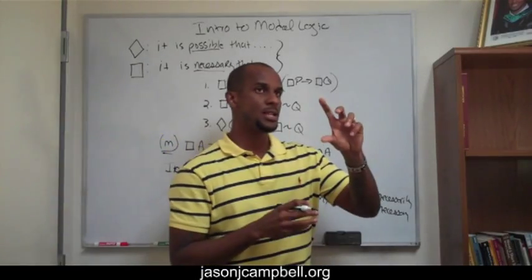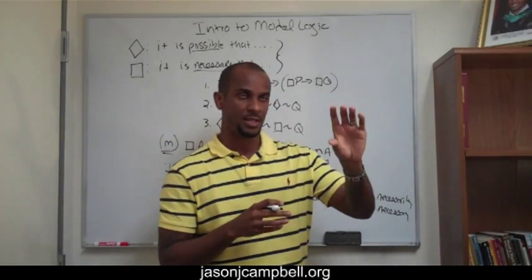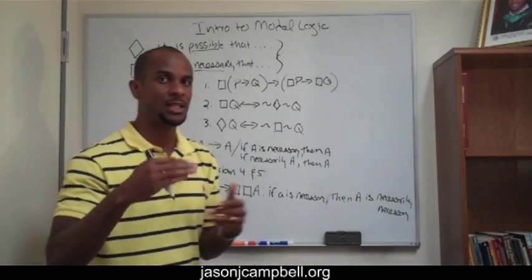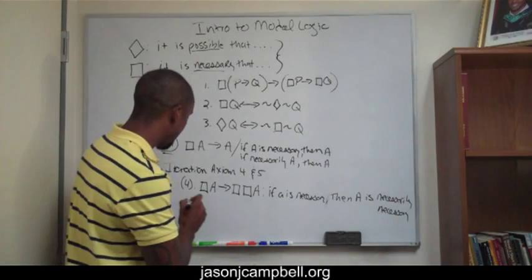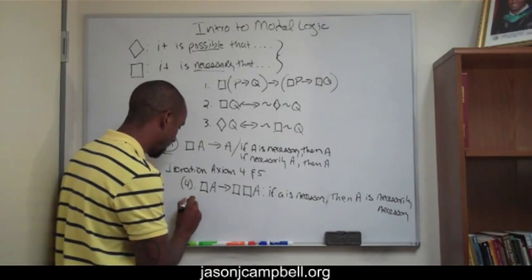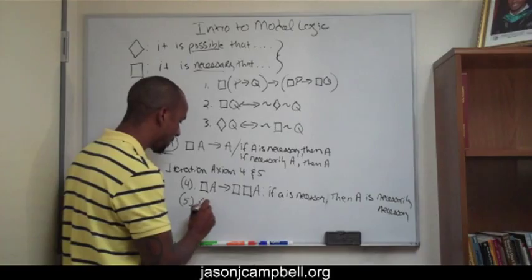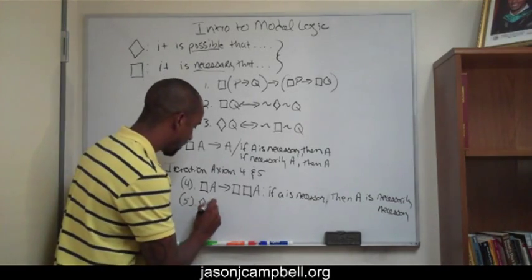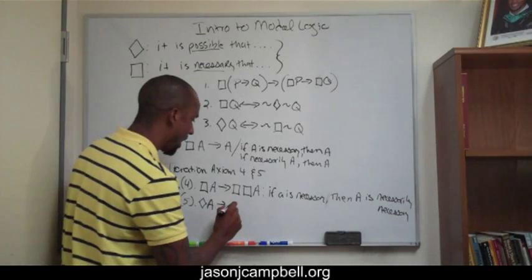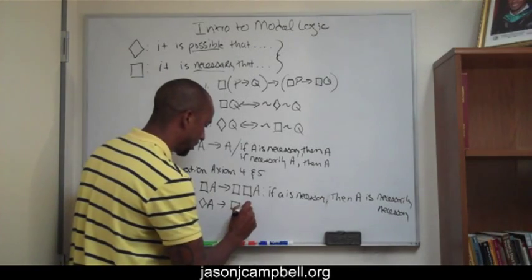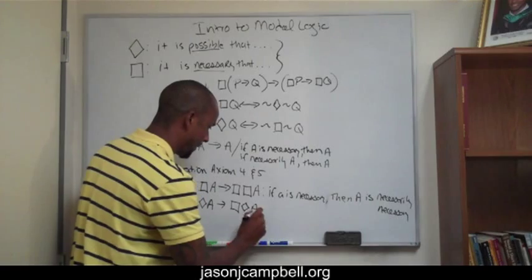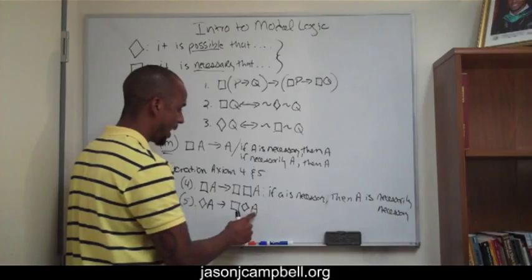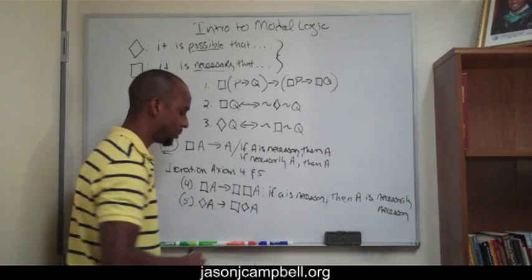So I can say to myself, if A is necessary, then A is necessarily necessary, but I should also be able to make a claim on the possibility of A. And that's where Axiom 5 comes in. What 5 is going to say is, if A is possible — remember the diamond means possibility — if A is possible, then A is necessarily possible.